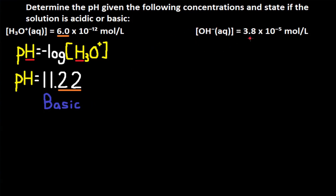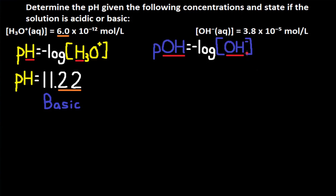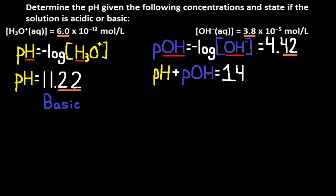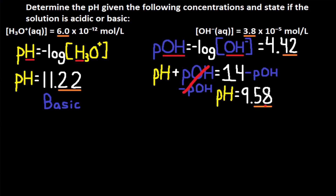The concentration of OH- is equal to 3.8×10⁻⁵ moles per liter. We can't get pH directly, but we can get pOH. pOH equals the negative log of OH-, so we take the negative log of 3.8×10⁻⁵ and get 4.42. OH- has two sig digs, so pOH has two decimal places. Then pH equals 14 minus pOH. When we do 14 minus 4.42, we get pH = 9.58. Use exact answers, not rounded. A pH greater than 7 is basic.